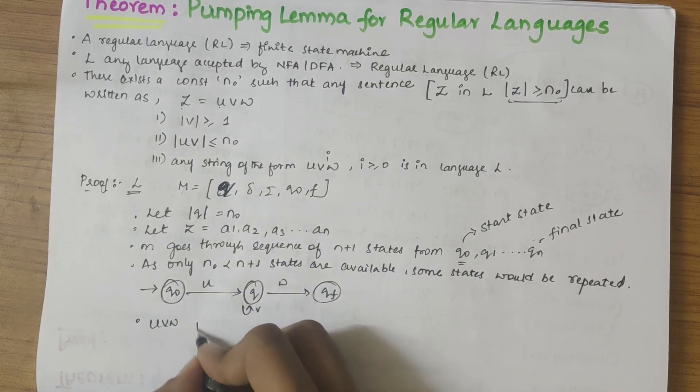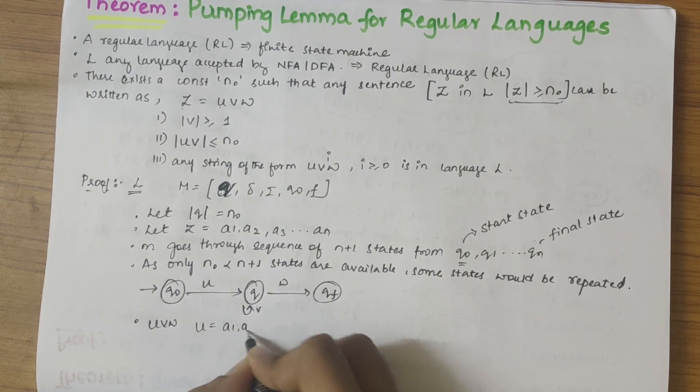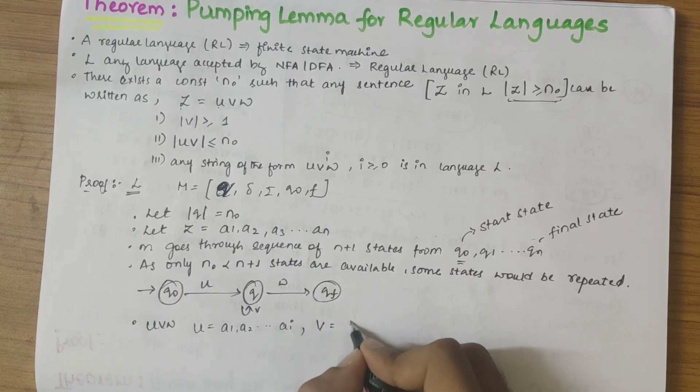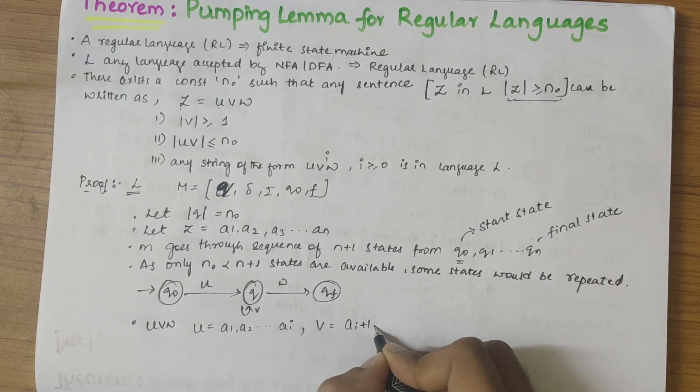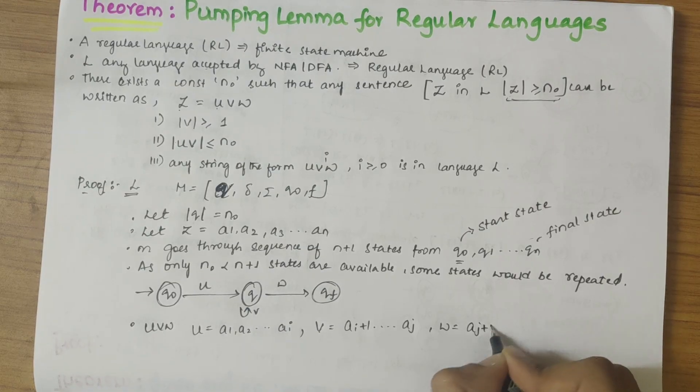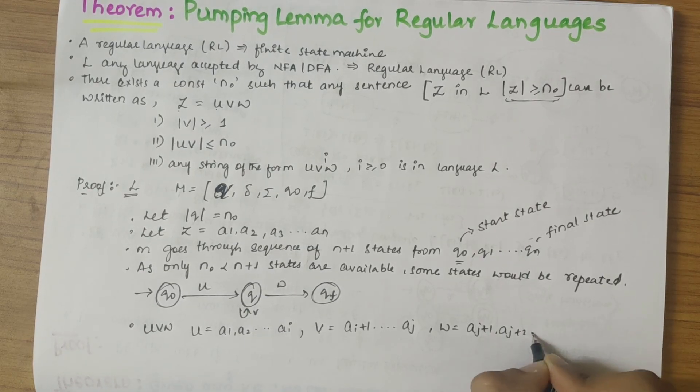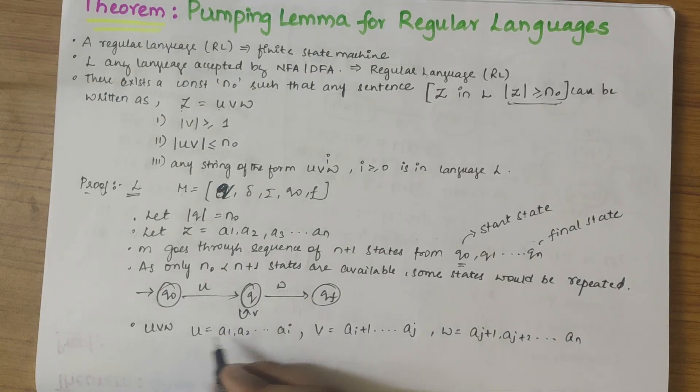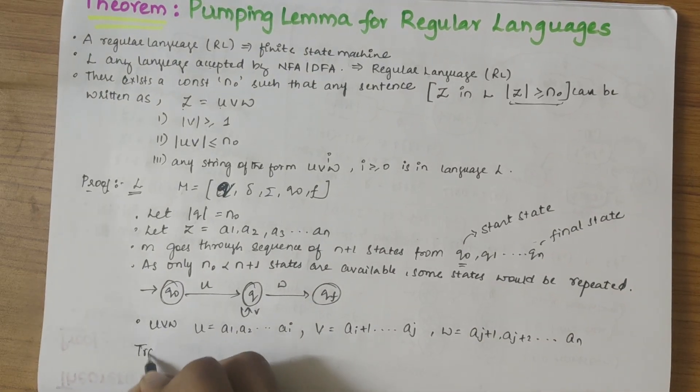u is equal to a1 a2 till ai, then v is equal to ai plus 1 till aj, and w could be written as aj plus 1, aj plus 2 till a to the an. So here the transitions would be...